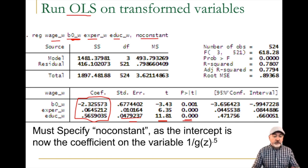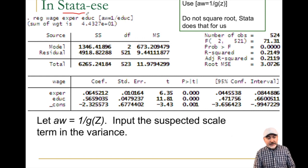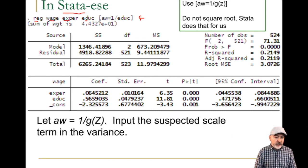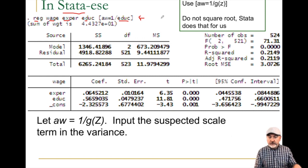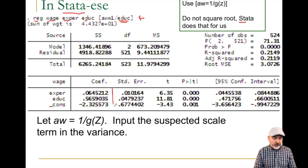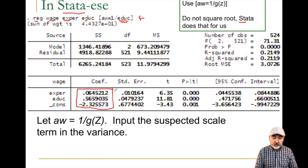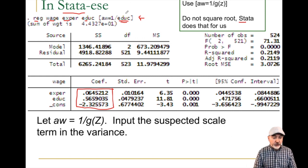That's the hard way. Stata has a way to do this in one step. We just use the regress command with our original variables y, x1, x2, and then apply the analytical weight option — in brackets at the end of the regression command: aw equals one over g of z. In this case g of z was education. Note that Stata handles dividing through by the square root for us, so we just put in one over g of z. Behind the scenes Stata does exactly what we just did by hand, giving the same results.